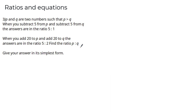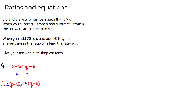Our goal is to find p and q. From the first condition, (p − 5):(q − 5) = 5:1, so cross multiplying gives 1 × (p − 5) = 5 × (q − 5). With one equation and two unknowns, we need the second condition: (p + 20):(q + 20) = 5:2, giving 2(p + 20) = 5(q + 20). Now we have two equations and two unknowns — a simultaneous equation.